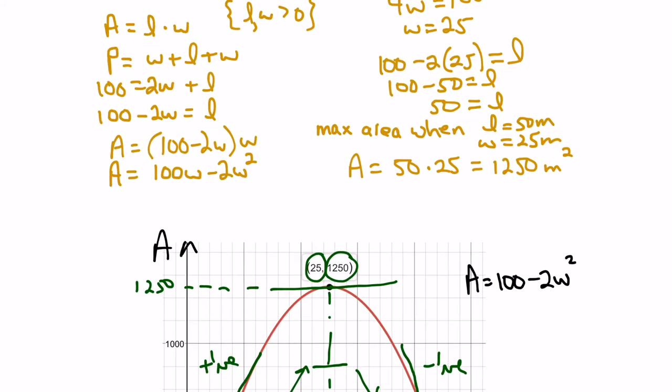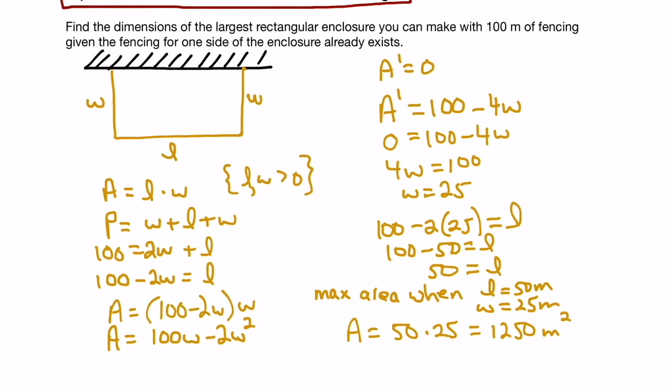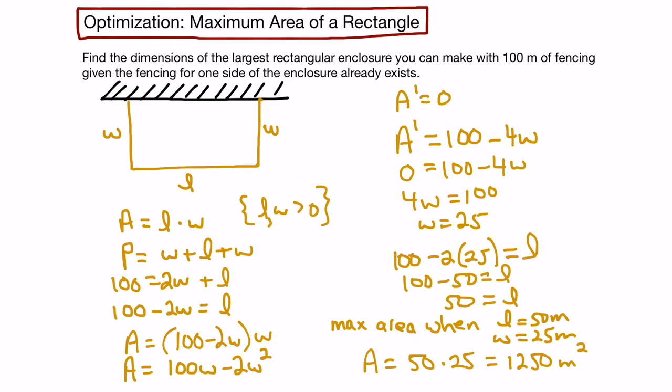Let's come back and just summarize and answer the question. We want to find the dimensions of the largest rectangular enclosure we can make with 100 meters of fencing, given that one side exists. The largest we can make is when length is 50 meters and width is 25 meters. And there you go.